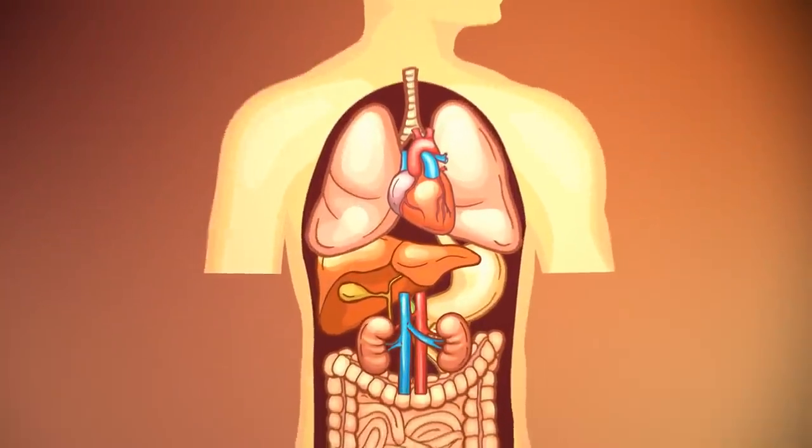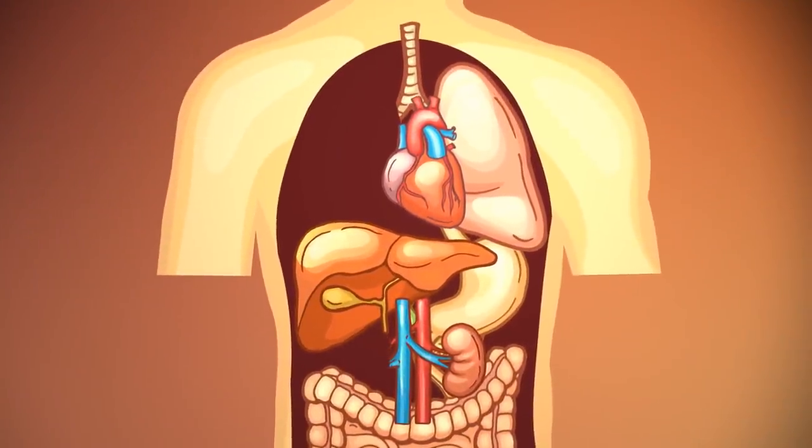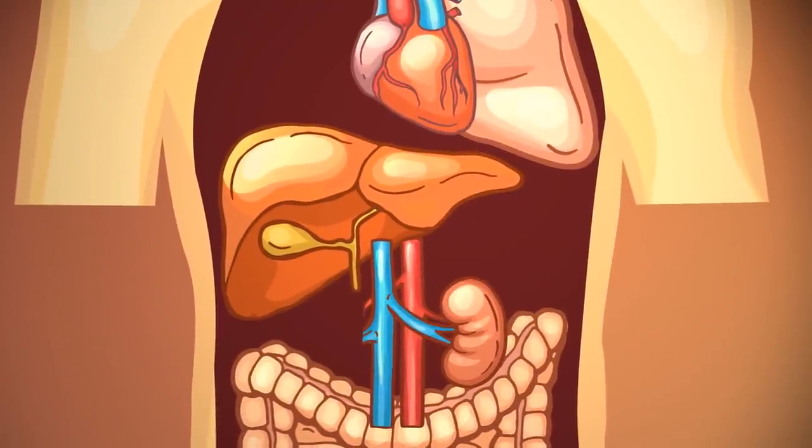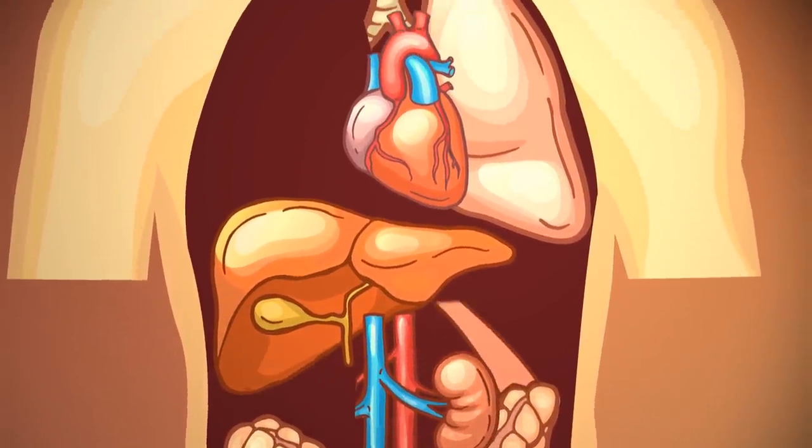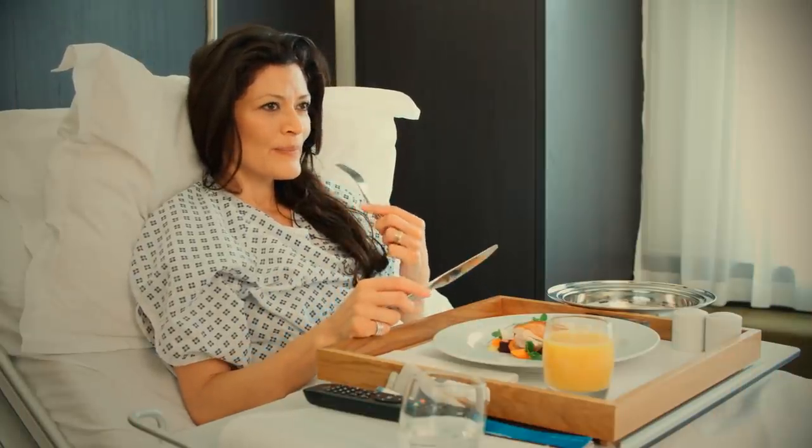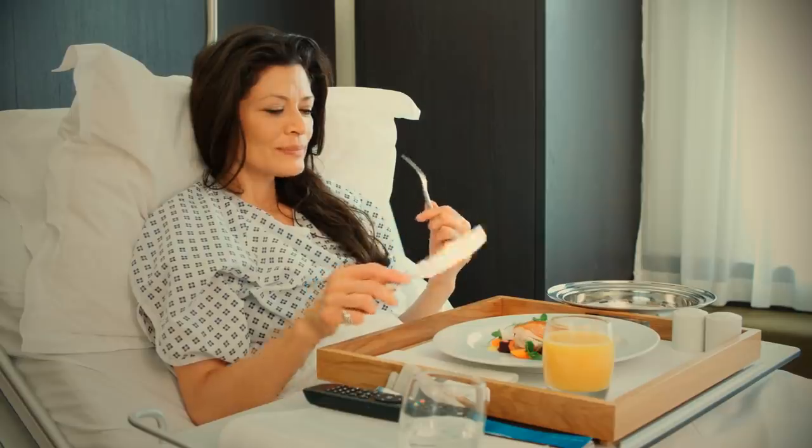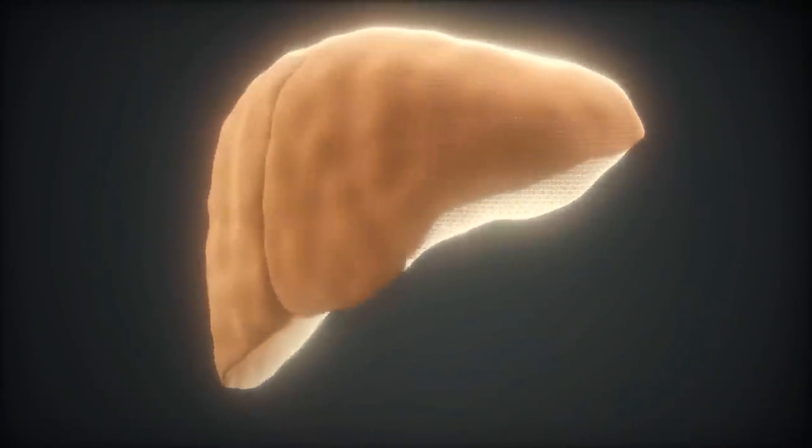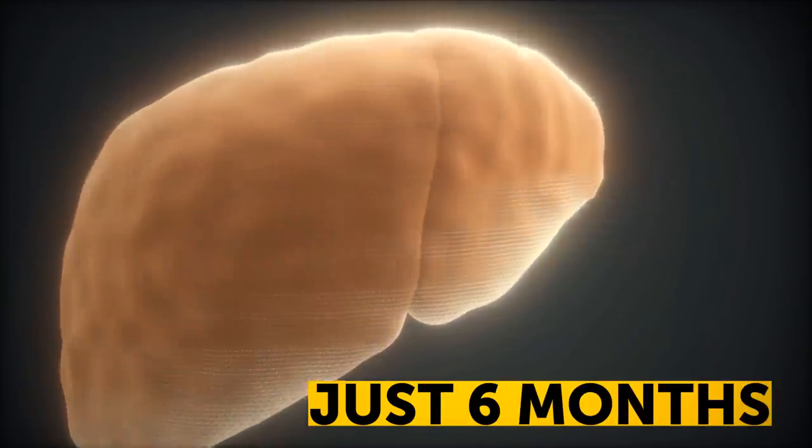We only need one lung and one kidney, and we don't even need a stomach. If your stomach is removed, surgeons will just connect your esophagus to your small intestine, and you can eat again. Our spleen, appendix, and gallbladder can all go as well. The liver is the only organ that can regrow itself, in as little as six months.